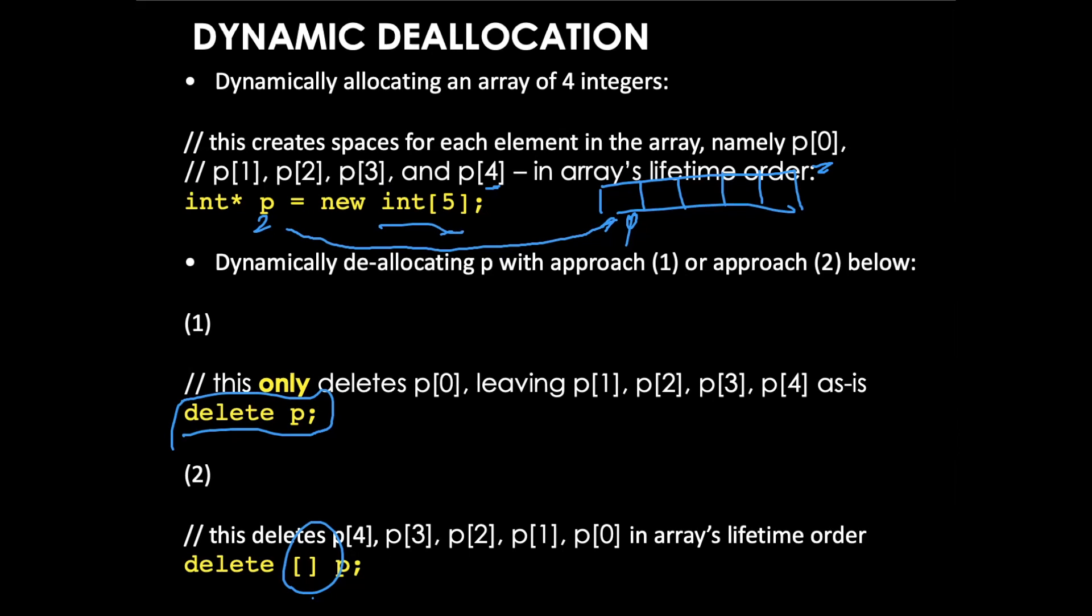But when you do delete bracket p, the deallocations occur on the very last element, which is index four, and then three, two, one, zero in reverse lifetime order.